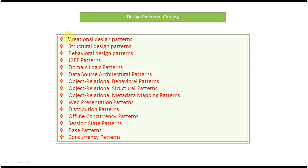There are this many patterns available in Java and enterprise architectural patterns. Under each category, various patterns are available. For example, under creational design patterns there is the builder pattern, factory pattern, abstract factory pattern, and singleton pattern. Similarly, under structural design patterns there are a lot of patterns as well.